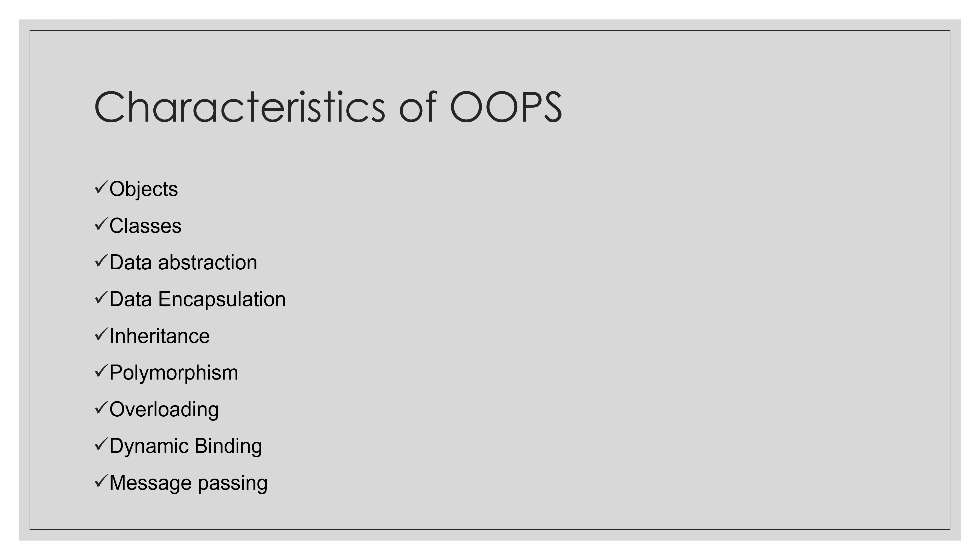A base class is a class whose properties are inherited by another class. A derived class is a class that inherits properties from the base class. These are the definitions of base class and derived class.